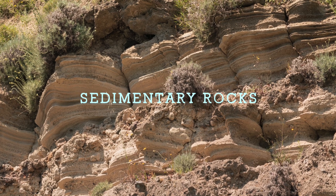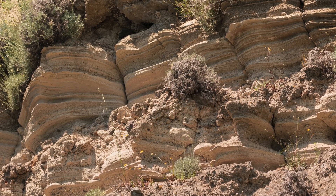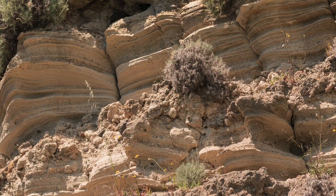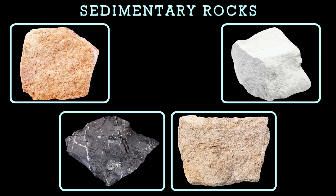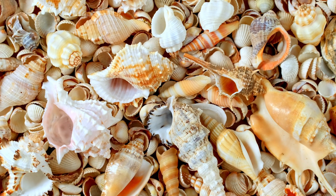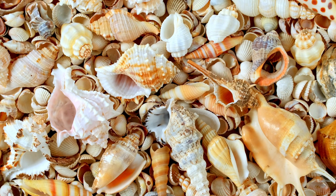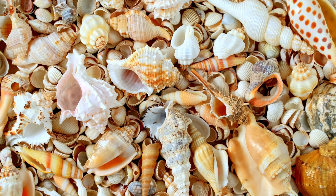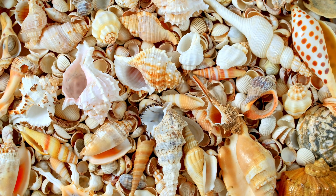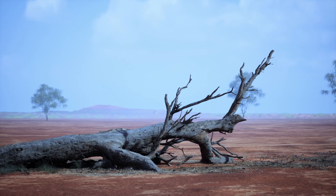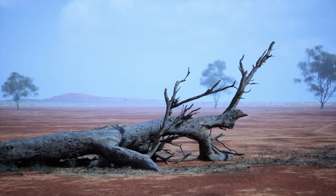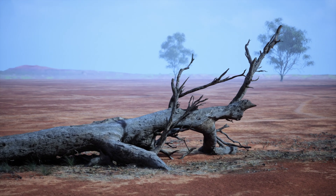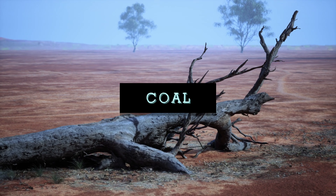Sedimentary rocks are formed through the deposition of sediments, which are then compacted and eroded over time. Some examples of sedimentary rocks include sandstone, shale, limestone, and dolomite. Here is a fun fact about sedimentary rocks: some of them are made almost entirely from the compression of calcium carbonate present in the shells of dead sea creatures, giving birth to limestone. Others are made from the compacting and weathering over millions of years of material originating from dead plants, giving birth to coal.